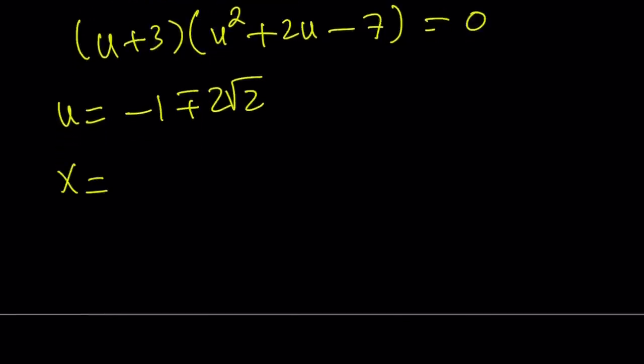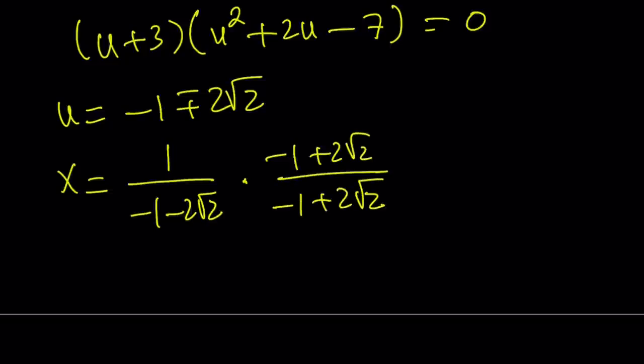x is equal to 1 over u. You remember that, so let's take one of them, like negative 1 minus 2 root 2, reciprocal of that. I'm going to multiply it by the conjugate. This is the conjugate for the denominator. And their product is going to look like this. Negative 1 plus 2 root 2 is the numerator. And when you multiply these two things, you're going to get the difference of 2 squared, 1 minus 8. That is going to give you negative 7. Double negatives make a positive.